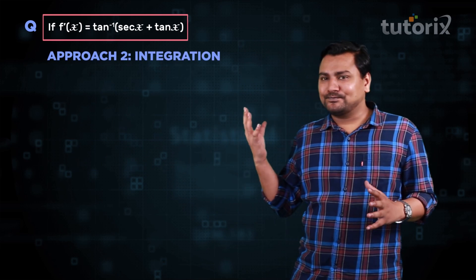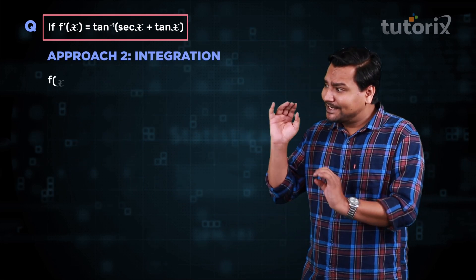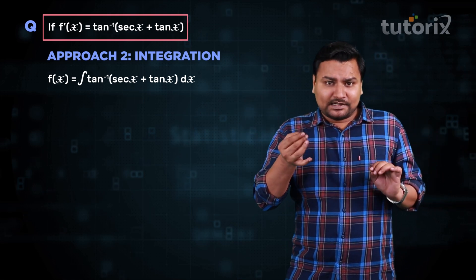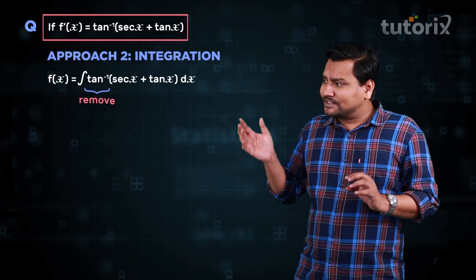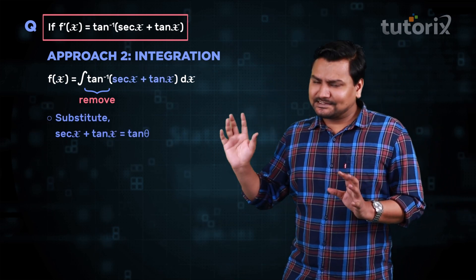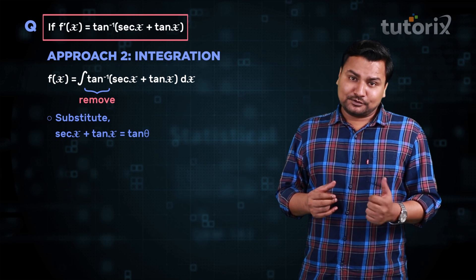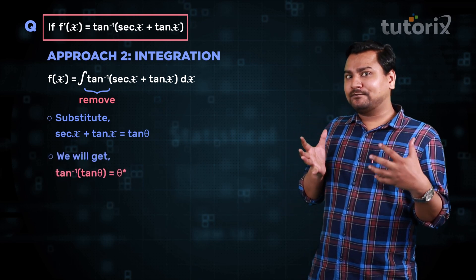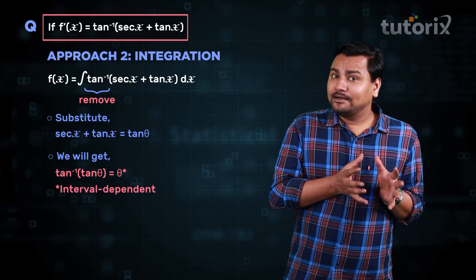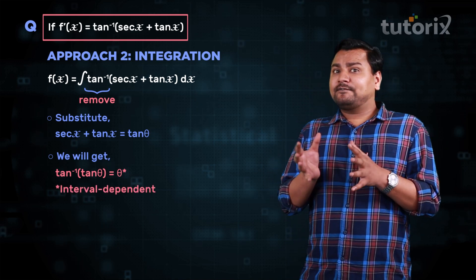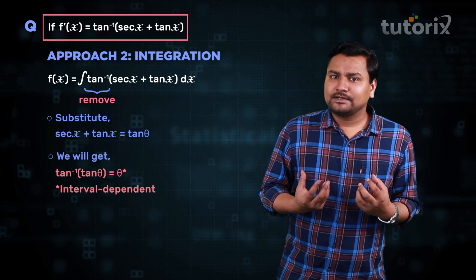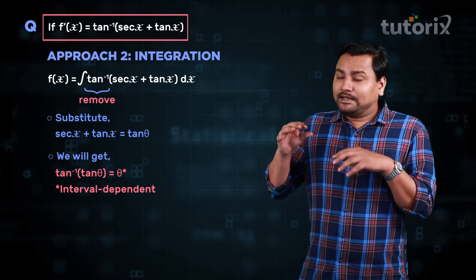Our basic target is to calculate the integral of tan inverse of (secant x plus tan x). The thought is to remove this tan inverse, so we substitute secant x plus tan x equal to tan θ, so that tan inverse of tan θ equals θ. Obviously that is interval dependent, but in indefinite integration we take some flexibility. Let's see where this directs us.